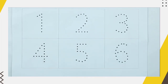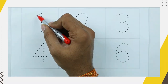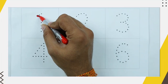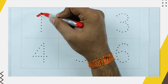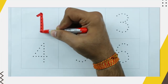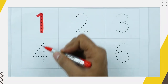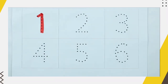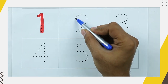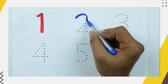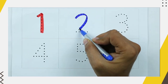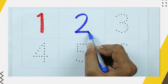Let's start! How to write numbers 1 to 10. It's number 1 — yes, number 1 with red color. Number 2 — it's 2 with blue color.